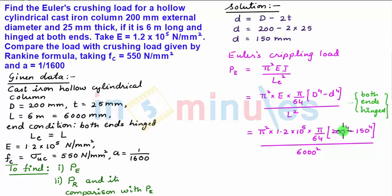So upon solving this we get the value of PE as 1.766 into 10 to the power 6 Newton. This is equal to 1.767 mega Newton. So this is our first answer: Euler's crippling load or crushing load.